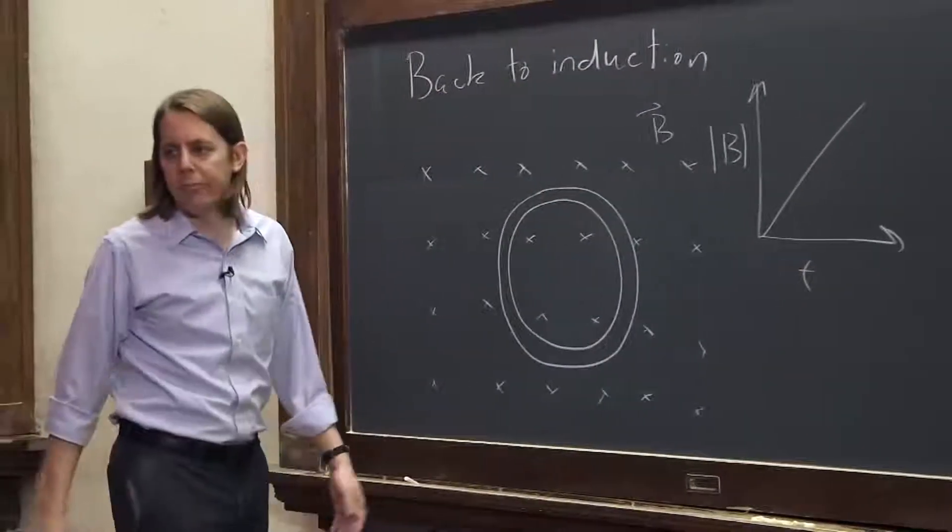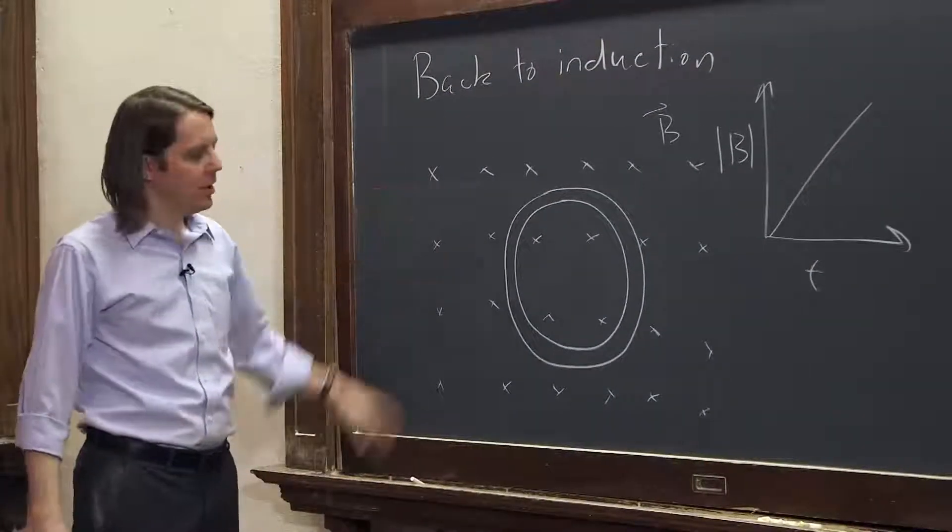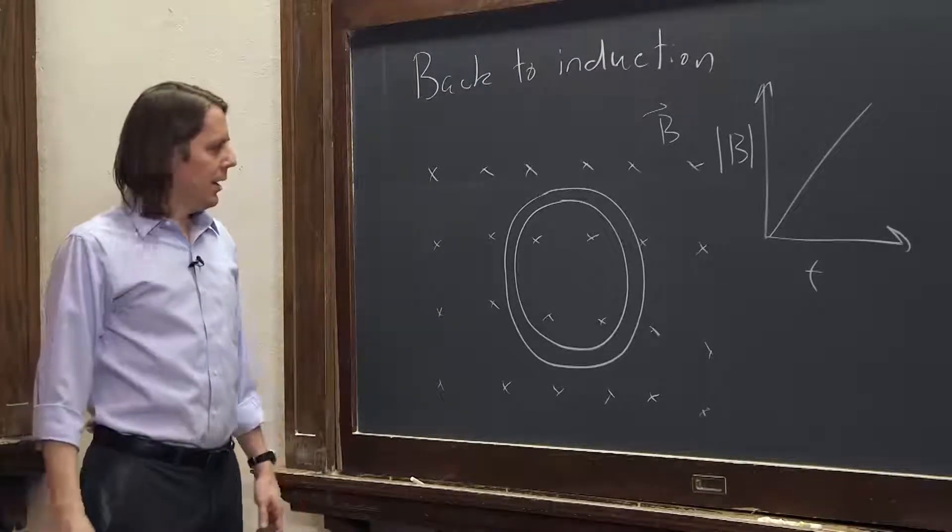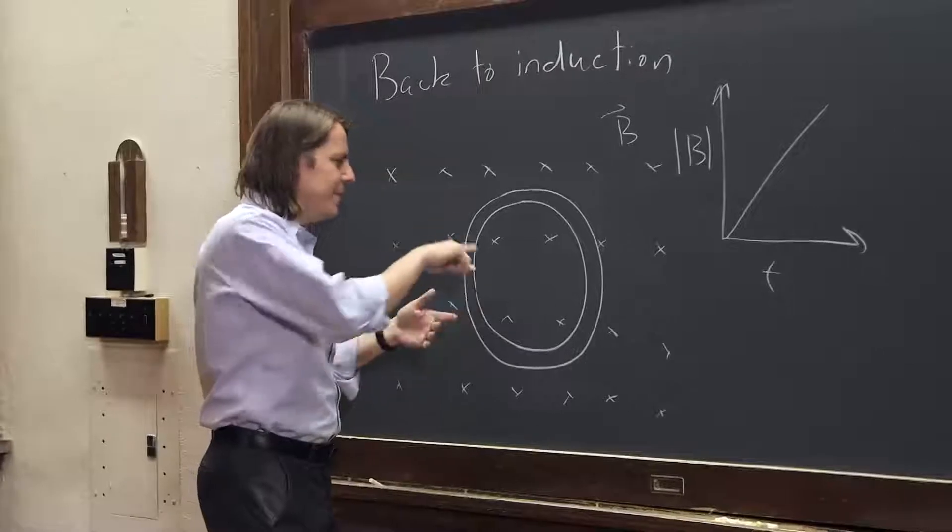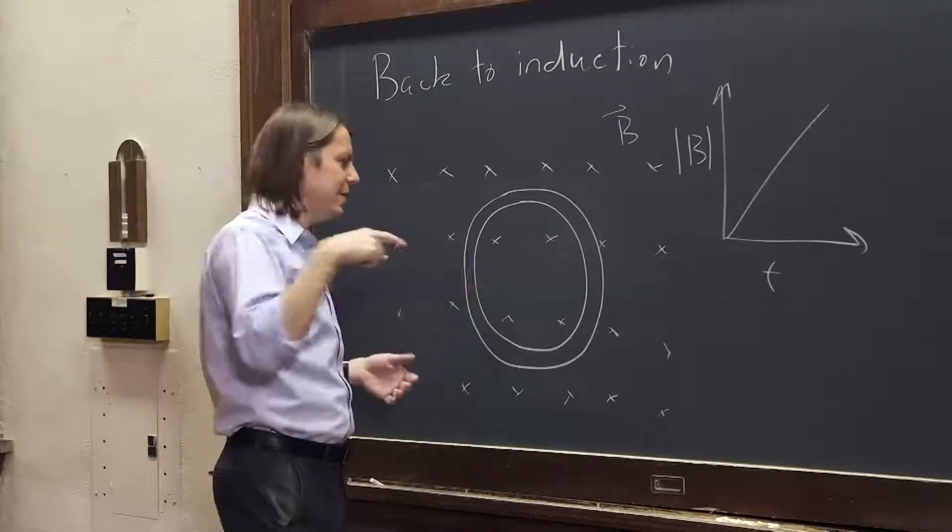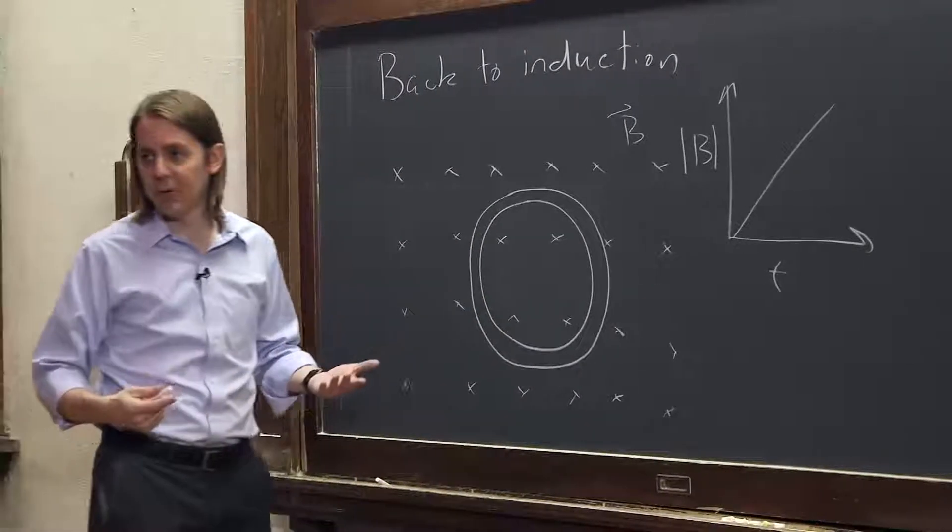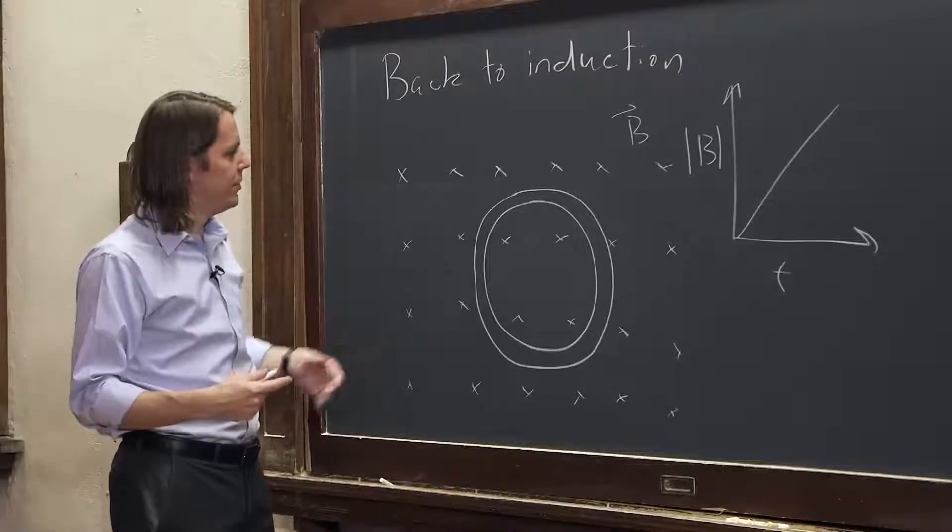Let's say the magnetic field is increasing as it points in. That way nothing has to move. Even though nothing is moving, the flux, the B·dA inside the loop is increasing. So we know there's going to be induction.